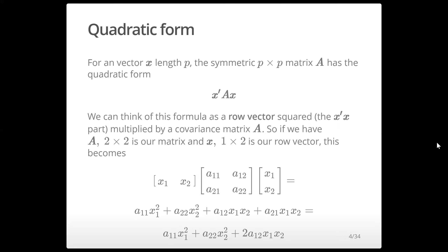We can think of what's going on here as multiplying a row vector x transpose, and squaring it — multiplying it by itself — then multiplying this by a covariance matrix A. For a 2×2 matrix and a 1×2 row vector, this gives us the row vector times the matrix times the vector transposed to a column: a₁₁ times x₁ squared, plus a₂₂ times x₂ squared, plus both elements times the off-diagonal elements times 2. We're taking an observation of two variables and multiplying by the covariance matrix.